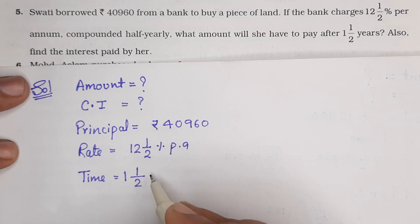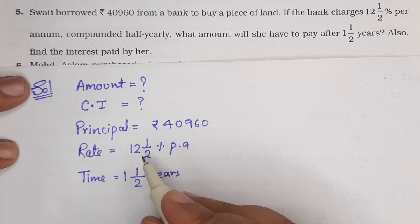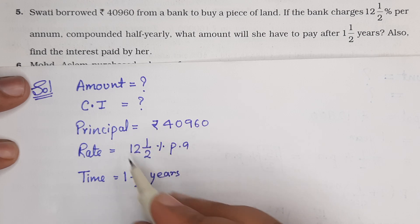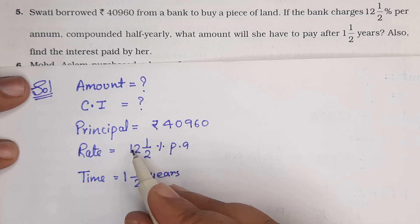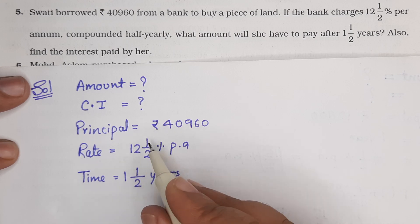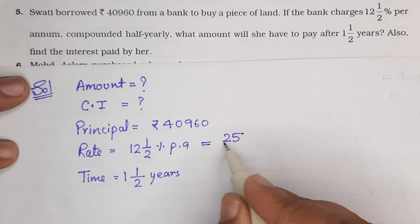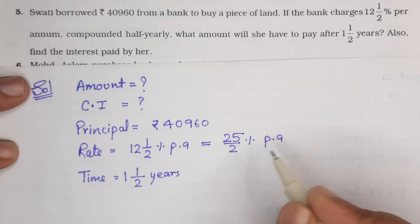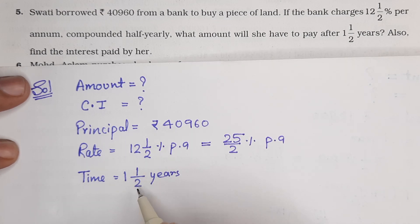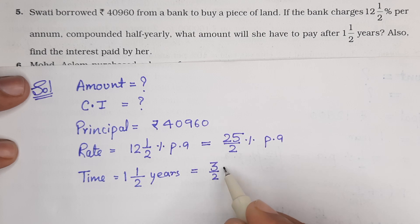अब इसको थोड़ा चेंज करते हैं। यह mixed fraction है — 2 की multiplier 12 से करोगे 24 plus 1, तो इसको लिखेंगे 25 upon 2% per annum। इसको भी चेंज कर लेते हैं: 2×1 = 2, plus 1 = 3, तो 3 upon 2 years।